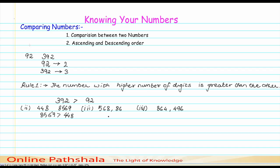Similarly, taking another example: 568 contains 3 digits and 86 contains 2 digits. So 568 is greater than 86.